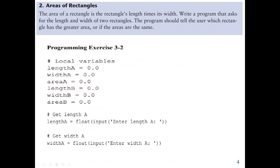Now let's look at the second problem. In the second problem, we should find the area of a rectangle, and the area of a rectangle is the length times its width. We are going to write a program that will ask for the length and width of two rectangles, and the program should tell the user which rectangle has a greater area, or if the areas are the same. This means we have to use a selection statement again.